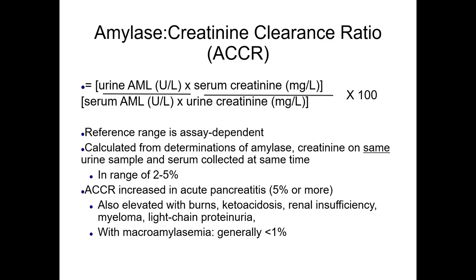The amylase-to-creatinine clearance ratio has a reference range that is assay-dependent. It is calculated from determinations of amylase and creatinine on the same urine sample and serum collected at the same time. The ratio is in the range of 2 to 5 percent and is increased in acute pancreatitis.